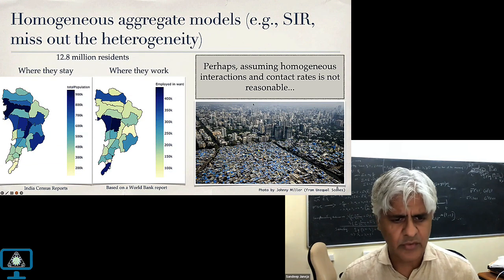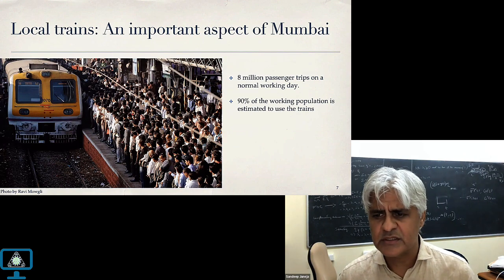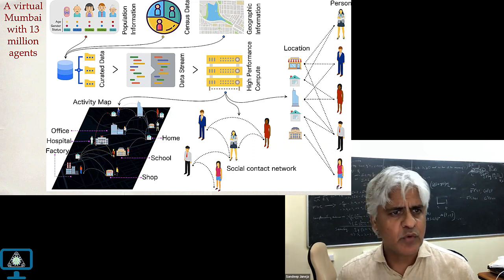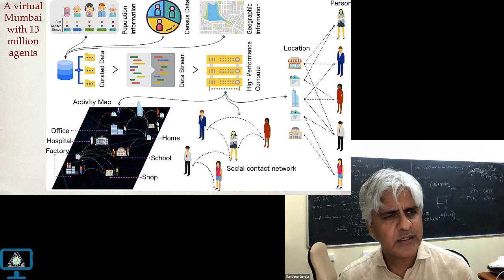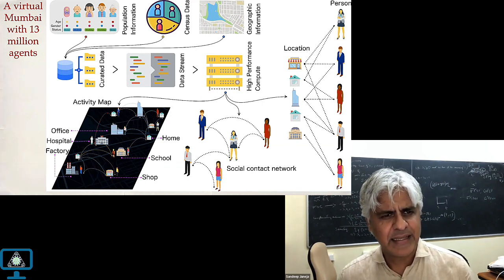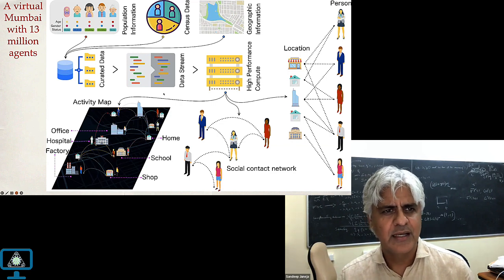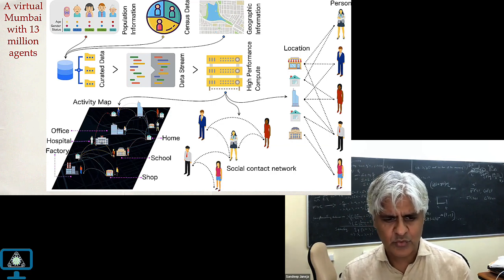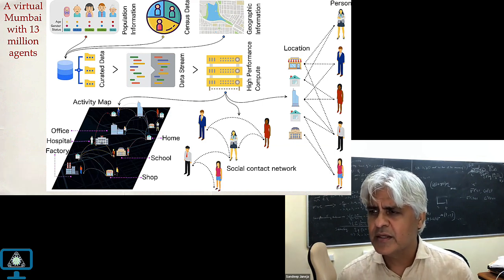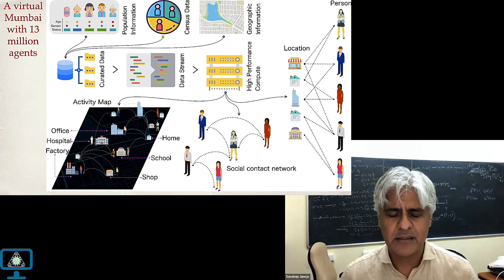The homogeneous assumption is probably not reasonable. On a normal working day, there are 8 million passenger trips, with 90% of estimated population using trains. We built this simulation model in C++, creating a 13 million city. People are staying in homes, going to workplaces, schools, communities — all those details of how people interact were modeled. Later on, we modeled multiple variants, reinfections when needed, and a vaccination schedule following the realistic Mumbai vaccination rollout.